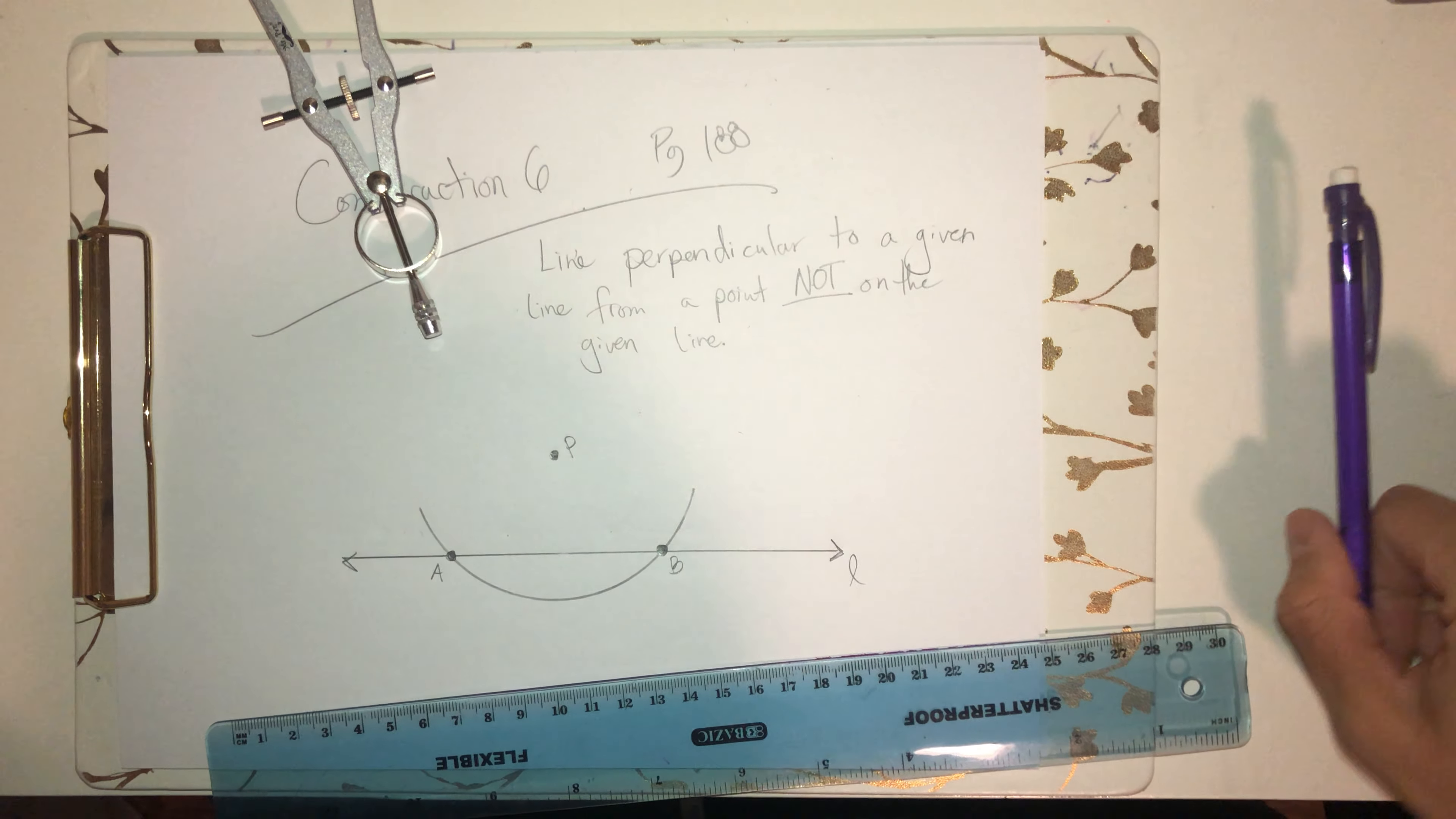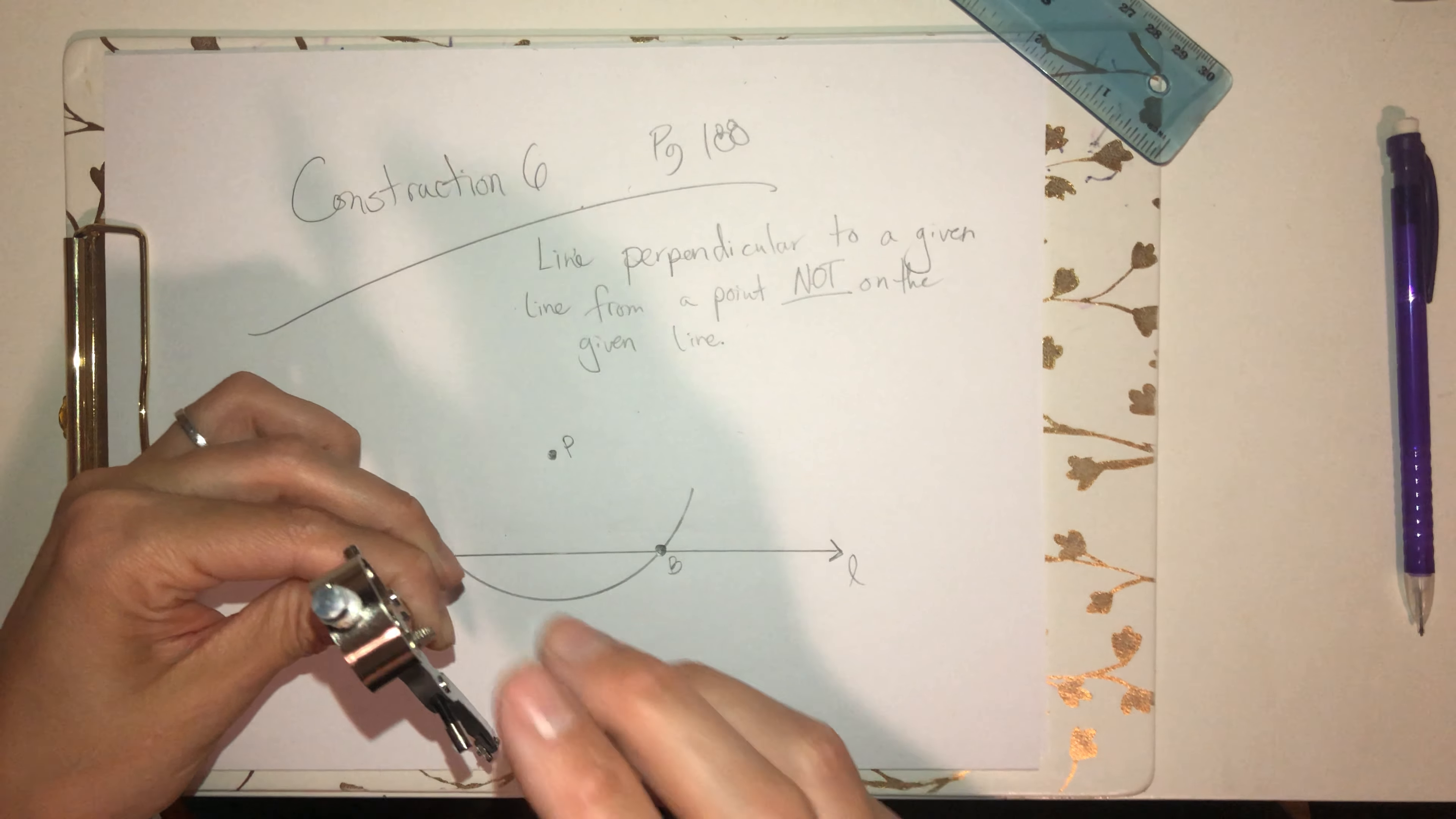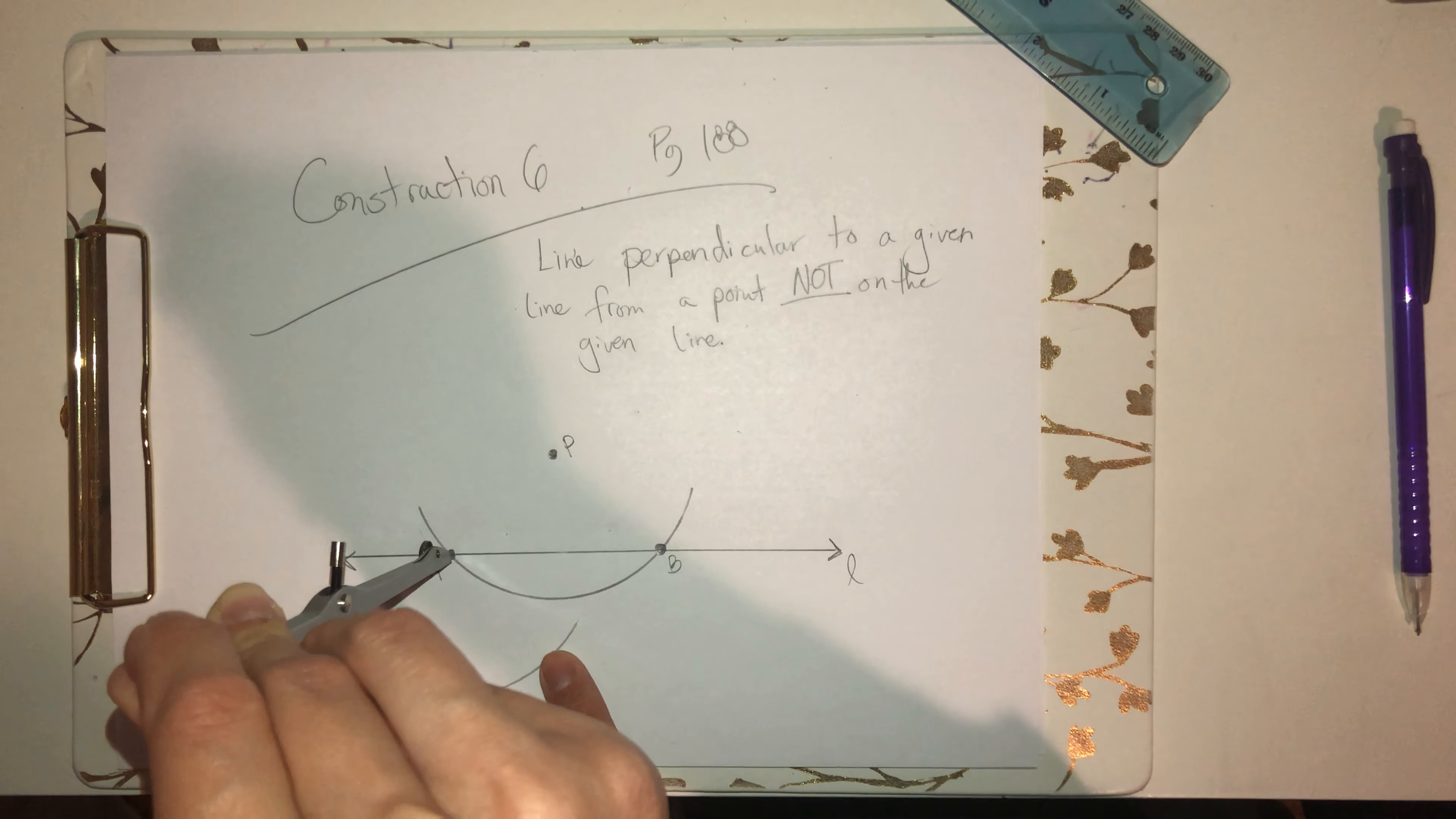And then you can keep your compass, I believe, at whatever width you determined was appropriate for this first arc. And you can draw two arcs underneath line L such that they intersect with one another, kind of directly below point P. So by that I mean center it at A. Go ahead and draw some arc below. Let's get right in the middle of that point. There we go. And what I mean is like something like this. You want to go below line L but also directly below line P. So that'll do.